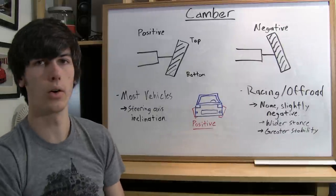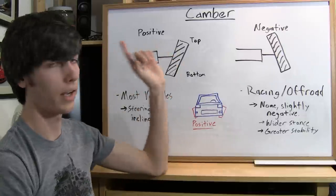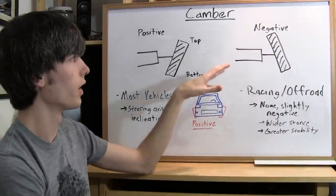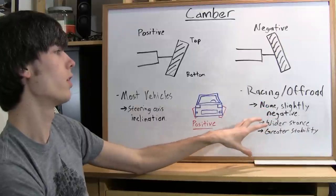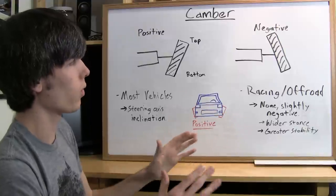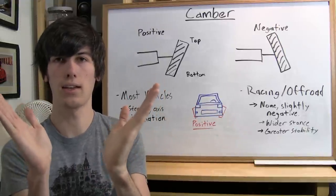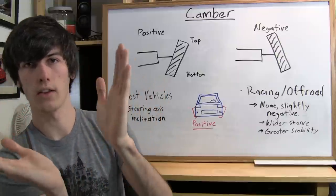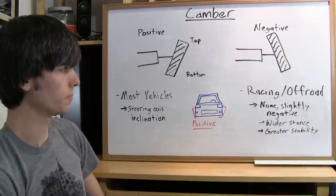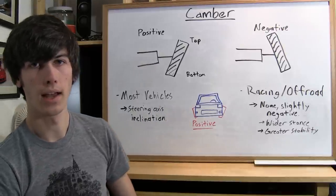Steering axis inclination will be in my next video, so watch that and it will explain why most vehicles use positive camber. On the other hand, some racing and off-road vehicle applications will use either slightly negative or no camber. That's for reasons such as having a wider stance and greater stability. If you've got the inside of your tires coming in and you go around a corner at 100 miles an hour, the car's going to want to roll. So with racing or off-road applications where stability is critical, you might have negative or neutral camber. And that's camber.